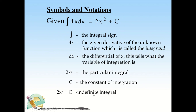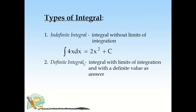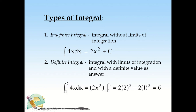This is called the indefinite integral because we also have the definite integral. The indefinite integral is the integral without limits of integration — for example, the integral of 4x dx = 2x² + C. The definite integral has limits of integration and gives a definite value as the answer. For example, the integral of 4x dx from 1 to 2, where 1 is the lower limit and 2 is the upper limit.